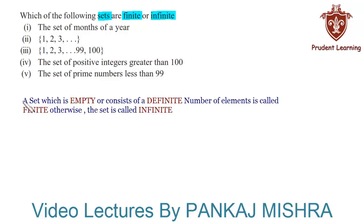A set which is empty or consists of a definite number of elements is called a finite set. Otherwise, the set is called infinite. Keeping this definition in mind, let us try to solve each section one by one.